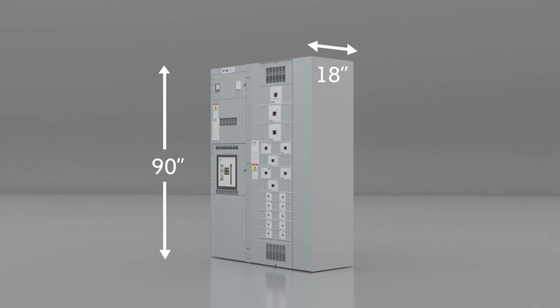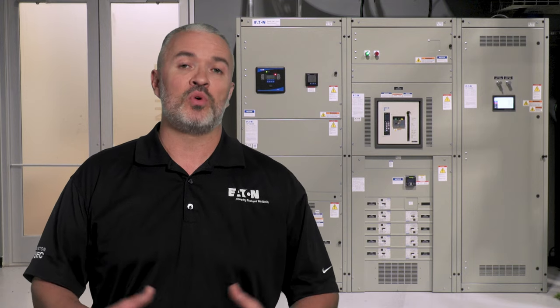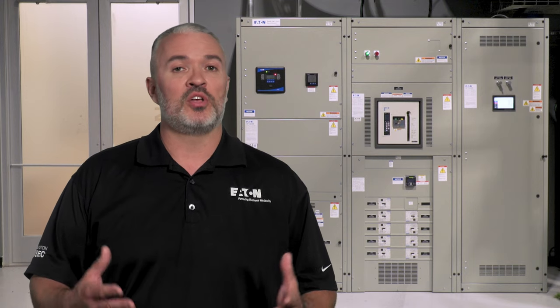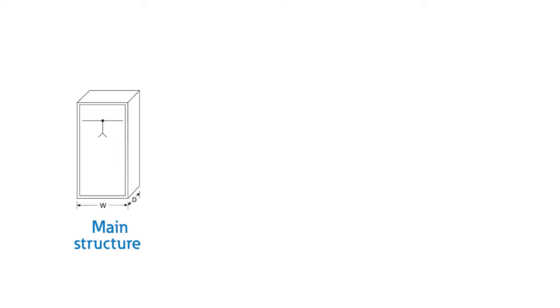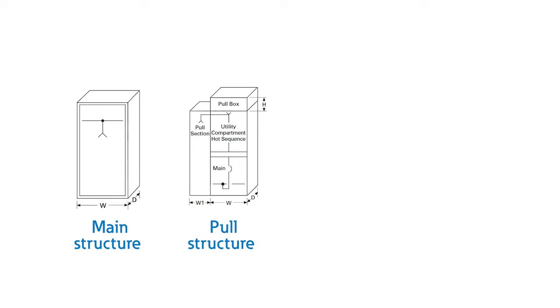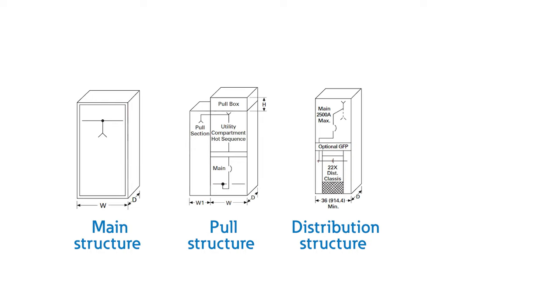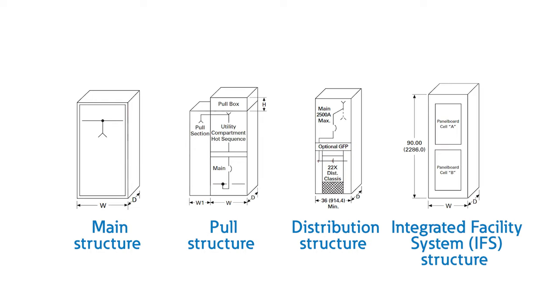There are four main structure types common to all switchboards, but not all switchboards require all these structure types: main structure, pull structure, distribution structure, and the integrated facility system or IFS structure.